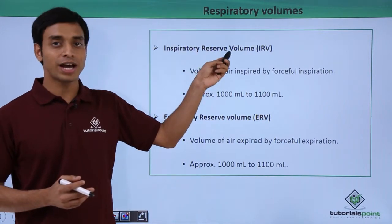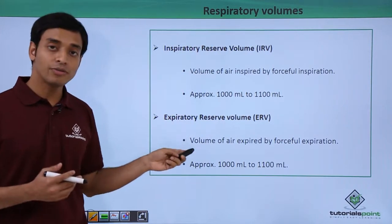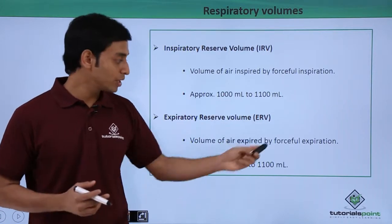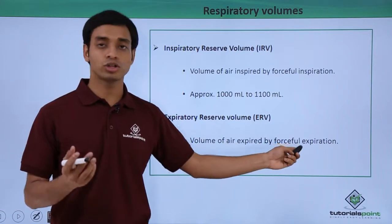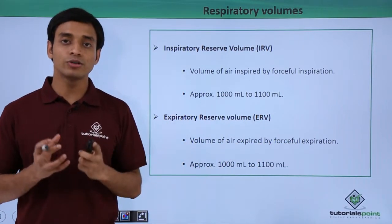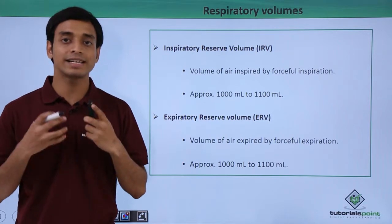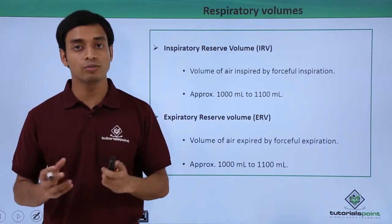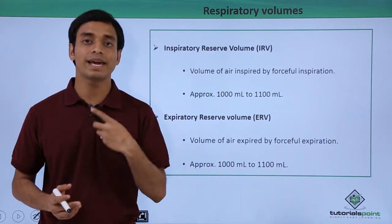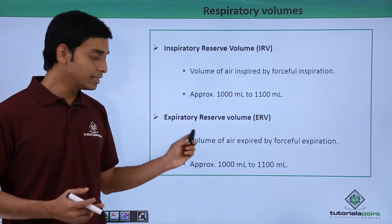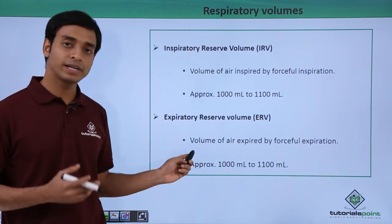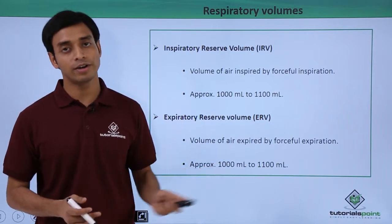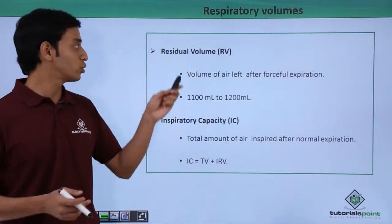The next terminology is known as expiratory reserve volume, abbreviated as ERV. Similar to IRV, this is the volume of air that can be expired or exhaled out by a process of forceful expiration. If we try to forcefully exhale air, the volume that can be exhaled has been approximately calculated as 1000 milliliters to 1100 milliliters.